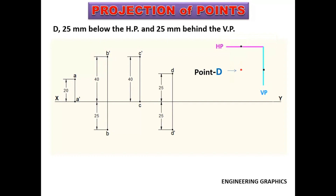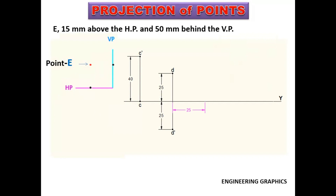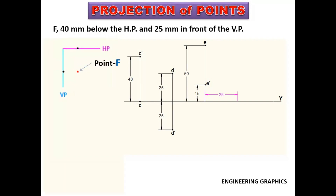Point E is 15 mm above the HP and 50 mm behind the VP. E is 15 mm above HP, so elevation should be 15 mm above XY line. Point E is 50 mm behind VP, so the plan should be 50 mm above XY line. Point F is 40 mm below the HP and 25 mm in front of the VP. Point F is 40 mm below HP, so elevation is 40 mm below XY line. F is 25 mm in front of VP, so the plan is 25 mm below XY line.